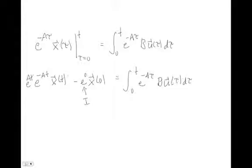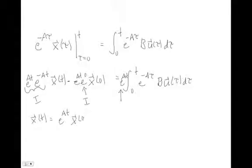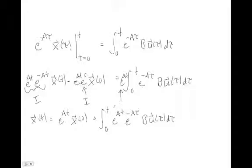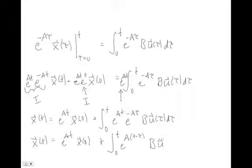Pre-multiplying by e^(At): on the left side, e^(At)·e^(-At) becomes the identity, which drops out. On the right, e^(At) is not a function of τ, so it acts as a constant inside the integral. After simplification we get x(t) equals e^(At)·x(0) plus the integral from 0 to t of e^(A(t-τ))·Bu(τ)dτ, combining the two exponential terms.